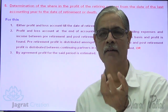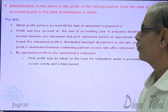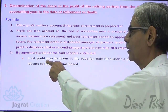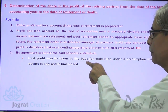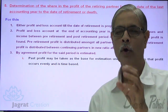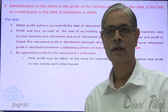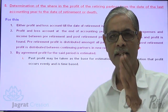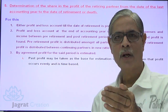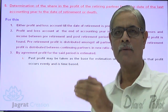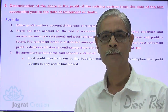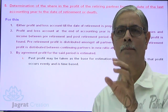For the purpose of estimation, certain criteria are required. Past profit may be taken as the basis for estimation under a presumption that profit occurs evenly and is time-based. This is the first presumption. The second presumption is that profit for the current year will be at par with profit for the previous period. On the basis of this assumption, estimation of profit for four months is done and the share of the retiring partner is given on the basis of this estimation.